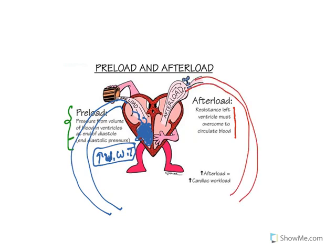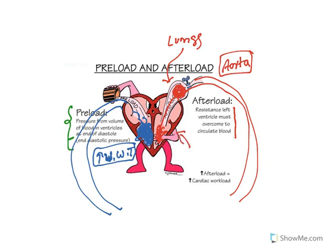The left atria gets oxygenated blood from the lungs, which falls to the ventricle. From the ventricle, blood must be pumped to the aorta, from which oxygenated blood is supplied to body parts. The pressure in the aorta determines the workload of the left ventricle — if aortic pressure is high, the ventricle must contract vigorously to pump blood into the aorta. This increases pressure on the left ventricular wall and increases cardiac workload. So increasing afterload increases cardiac workload, and increases in both preload and afterload increase mortality to cardiac muscle.